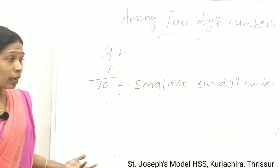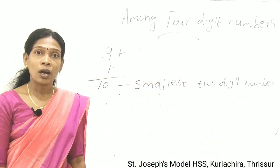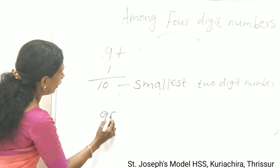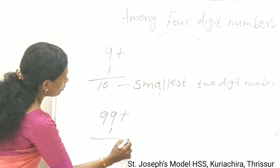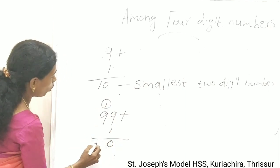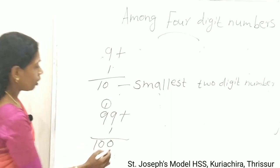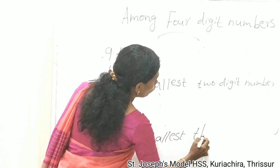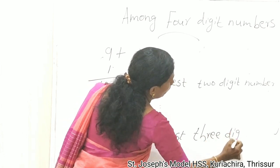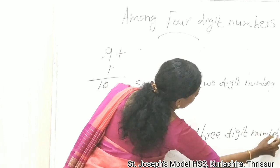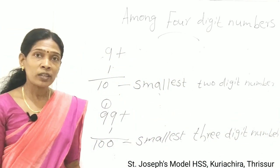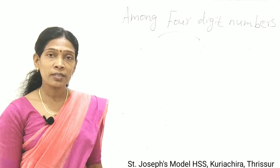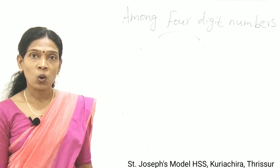When we add 1 to the largest 2 digit number, we get the smallest 3 digit number. So 99 + 1 = 100, and 100 is the smallest 3 digit number. Then how can we make the smallest 4 digit number? When we add 1 to the largest 3 digit number, we get the smallest 4 digit number.